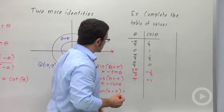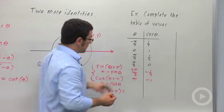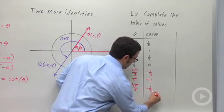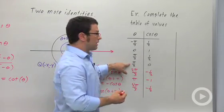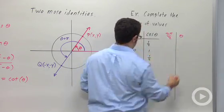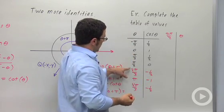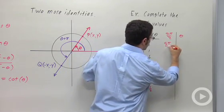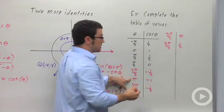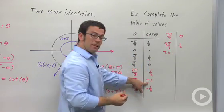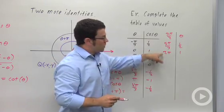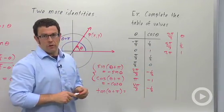Continuing: add pi to get 4 pi over 3, take the opposite value, negative one half. Add pi to get 3 pi over 2, take the opposite value, 0. Add pi again to get 5 pi over 3, take the opposite value, one half. Add pi to this and you get 2 pi, completing a full period, and the opposite of this is 1. So you can use this identity to extend the values of cosine or sine, which is really handy for graphing.